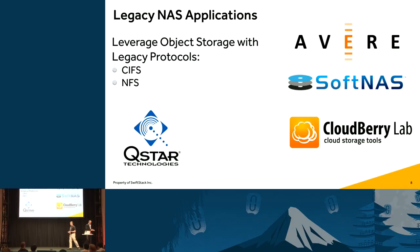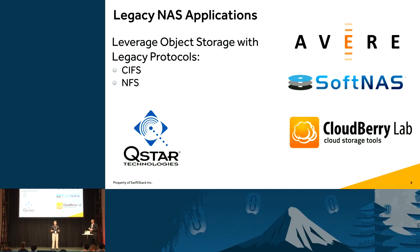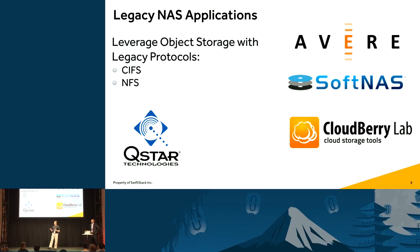We all know that legacy applications don't speak the Object API today — they speak CIFS or NFS. The reason you love object storage is it scales out, it's simple to administer, it's commodity storage so it saves you money, and you have it across different sites. What we advise is using one of these best-of-breed NAS gateways and putting that in front of your object storage. There are other projects with file systems in front, or other object storage companies with built-in gateways, but these are best-of-breed companies that just do it.